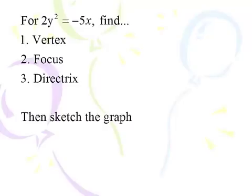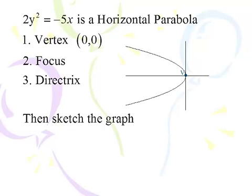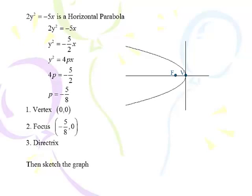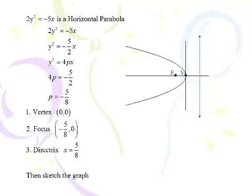Next example: 2y² = -5X. Find the vertex, focus, and directrix. The vertex is still at the origin. Since it's negative 5X and we have y squared, this is a horizontal parabola opening left. Dividing both sides by 2 gives y² = -5/2 · X. Setting -5/2 equal to 4P and dividing by 4 gives P = -5/8. So the focus is 5/8 of a unit to the left of the vertex at (-5/8, 0), and the directrix is at X = 5/8.